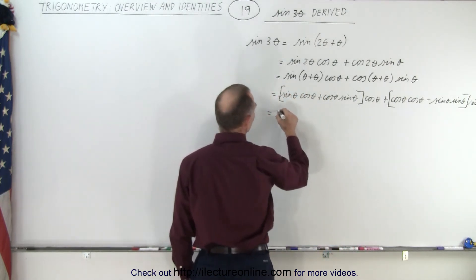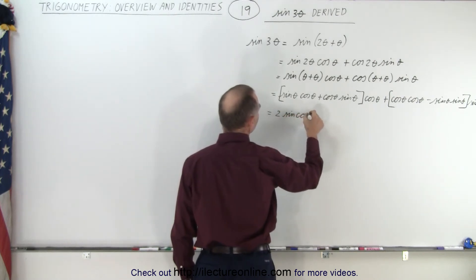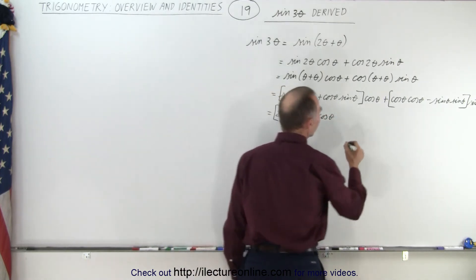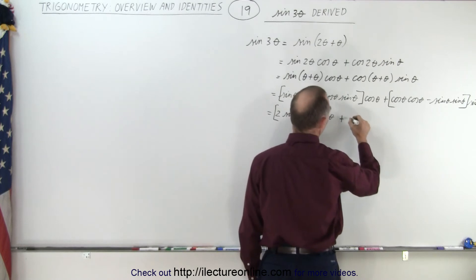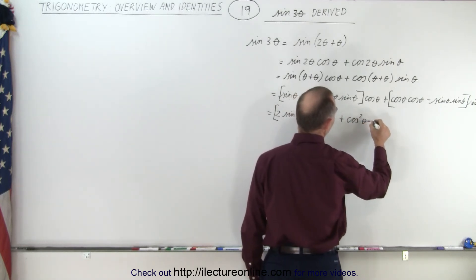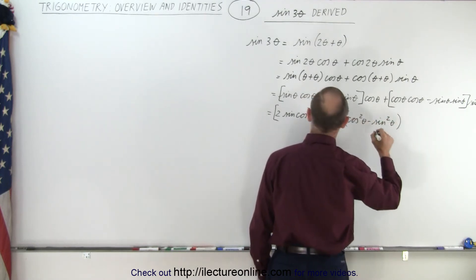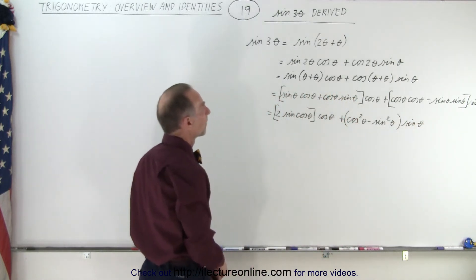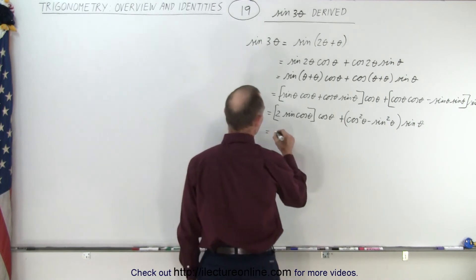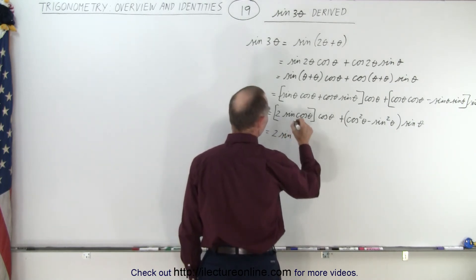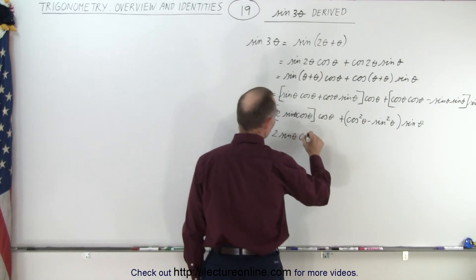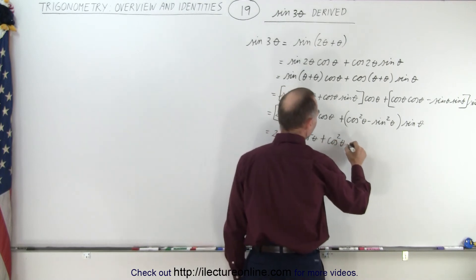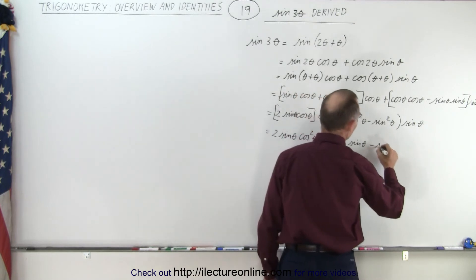Simplifying that a little bit, this would be equal to 2 times the sine of theta cosine of theta, multiplied times the cosine of theta. And here this becomes plus the cosine squared of theta minus the sine squared of theta, multiplied times the sine of theta.